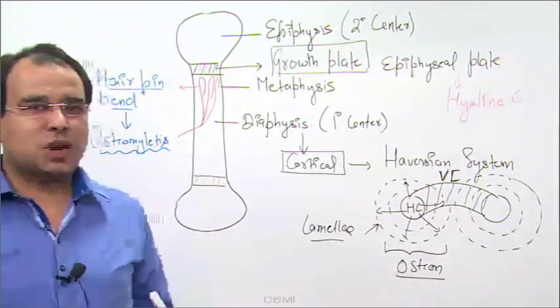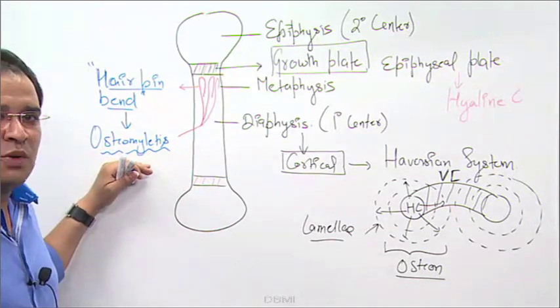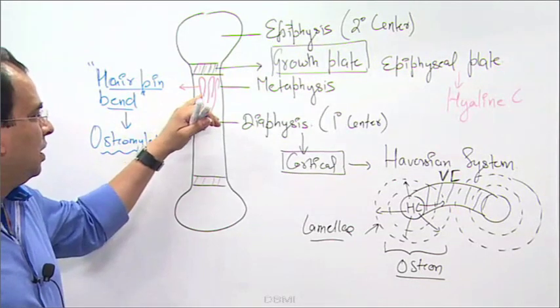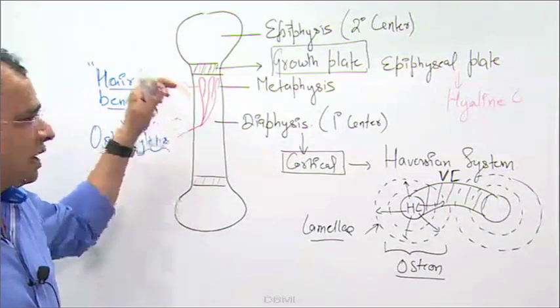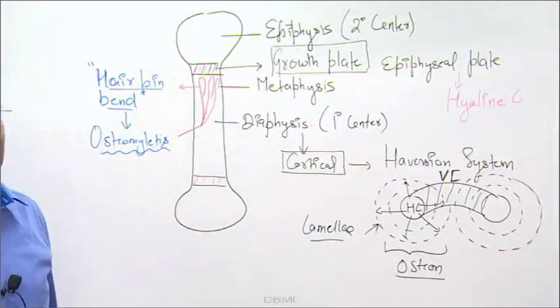One of the commonest causes for osteomyelitis is the presence of this hairpin bent loop-like structure of blood vessels in the metaphysis.